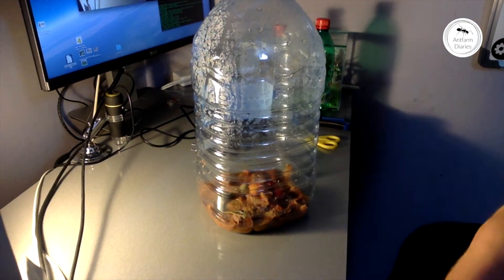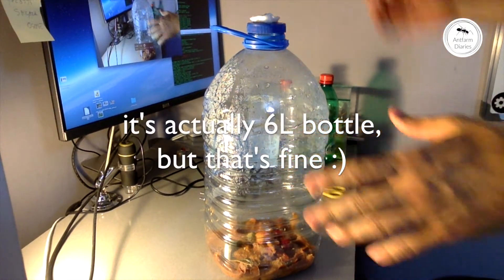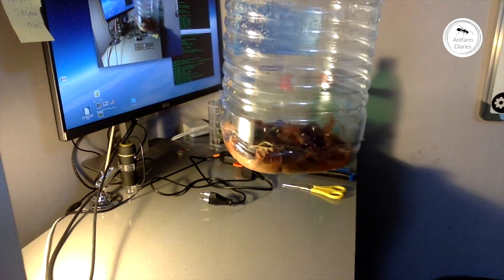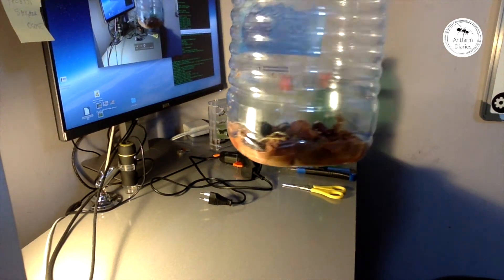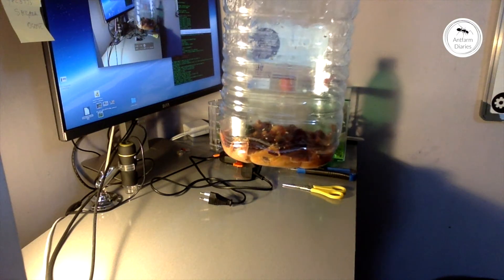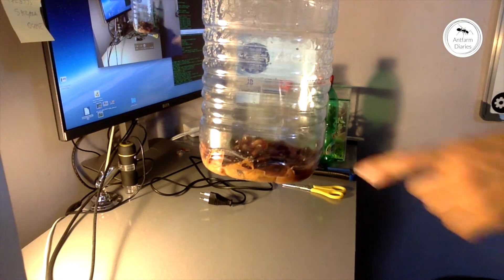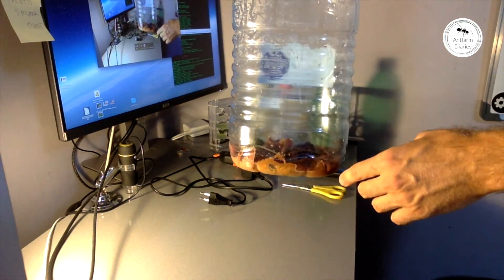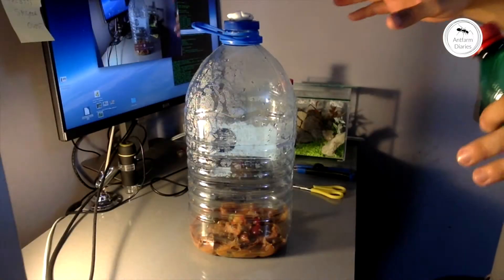As you can see, it's a 5-liter pet bottle and inside I put a little bit of fruits and left it for maybe two weeks already. So I have a lot of larvae there - you can see they're crawling on the walls of this bottle. This one is big, right?